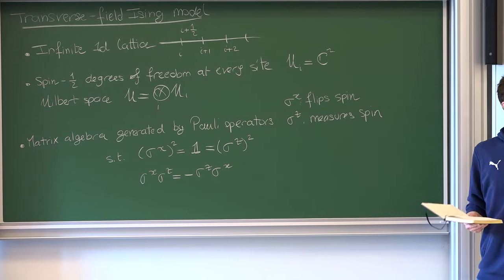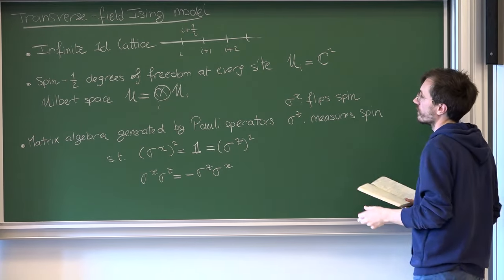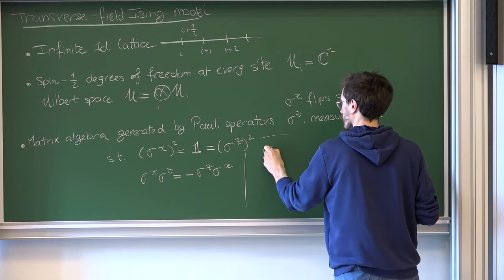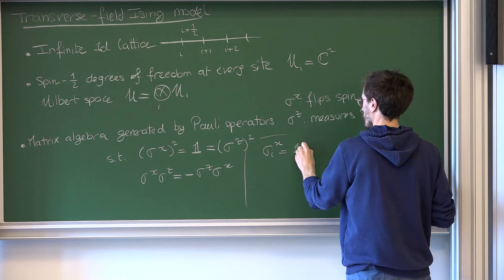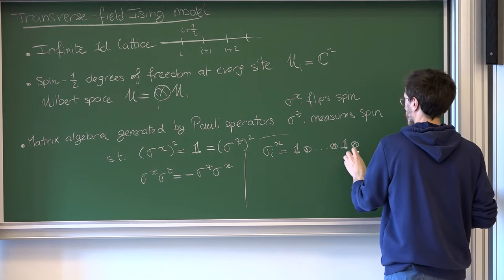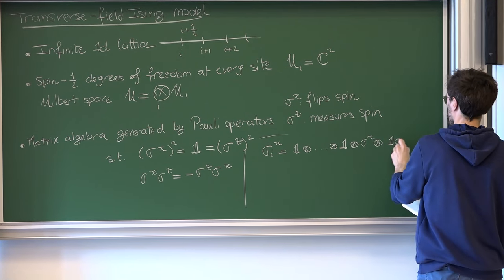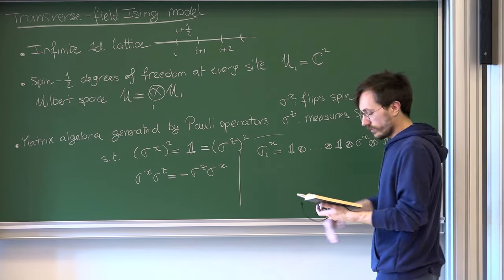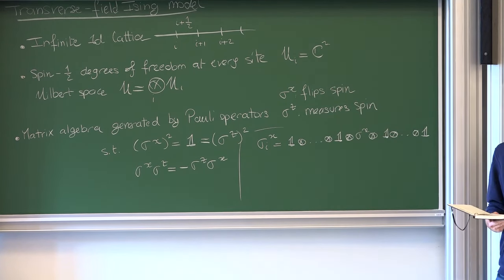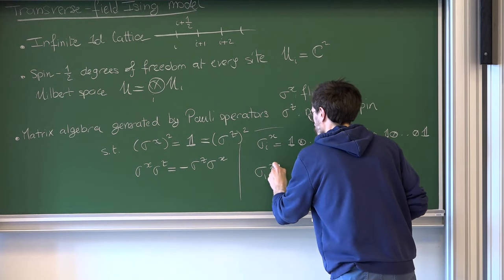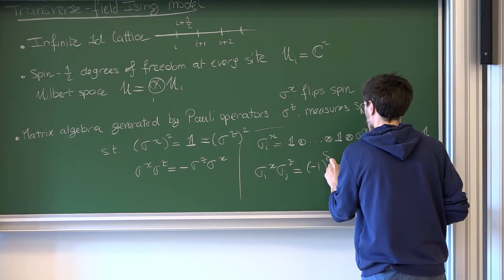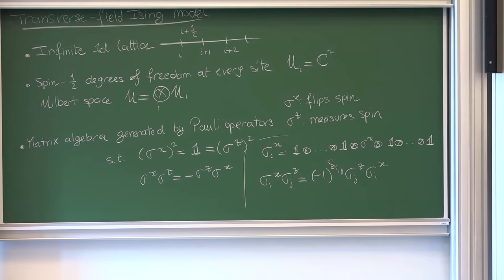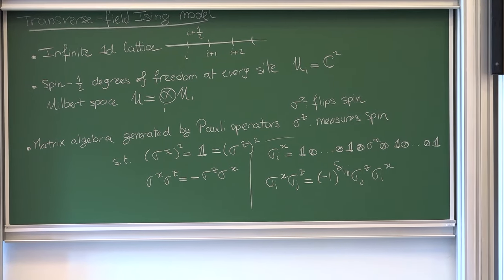Let me introduce notation we will use throughout. To refer to the operator acting at a given site, I write σᵢˣ, meaning the operator that is the identity everywhere except at site i where it acts with Pauli X. Since operators acting at different sites obviously commute, we have a slightly more general commutation relation: σˣ and σᶻ commute if they act on different sites, but anti-commute if they act at the same site.